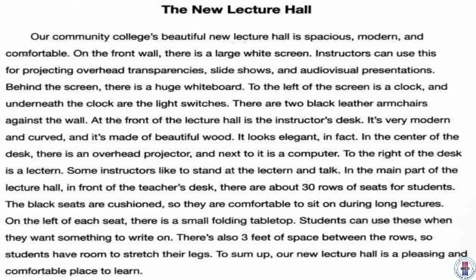Question three: the writer describes three main areas of the lecture hall — what are they? The first area is the front wall, where he describes what's on it, to the left of it, and near it. The second area is the front of the lecture hall, where he talks about the desk, an overhead projector, a computer, and a lectern — which is like a podium where the professor stands to teach. The third and last area is the main part of the lecture hall, where there are 30 rows of seats for students with tabletops. So the three main areas are the front wall, the front of the lecture hall, and the main part of the lecture hall.